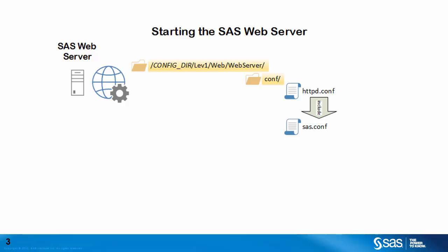The sas.conf configuration file includes all the details of how the SAS web server should connect to the SAS web application server. The main httpd.conf configuration file also contains a number of other include statements. One of these additional include statements includes the httpd-ssl.conf file from the extra subdirectory within the conf directory. This httpd-ssl.conf file contains the majority of the options required for using HTTPS with the SAS web server.